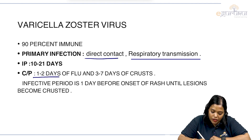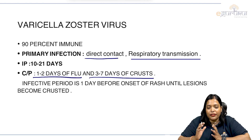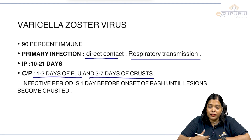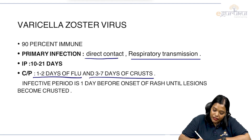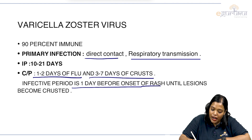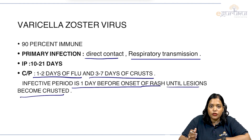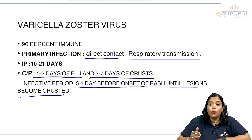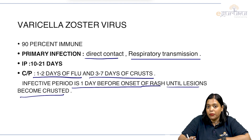The clinical picture includes 1 to 2 days of flu followed by 3 to 7 days of rash. The infective period starts one day before the onset of rash until the lesions become crusted — that is when we act as a source of infection to others.